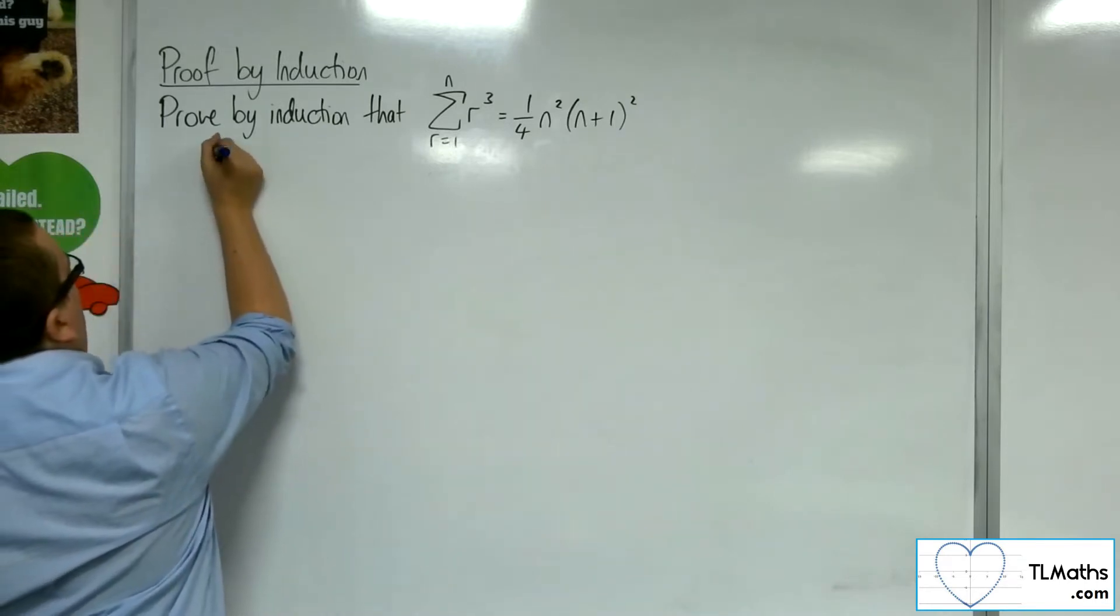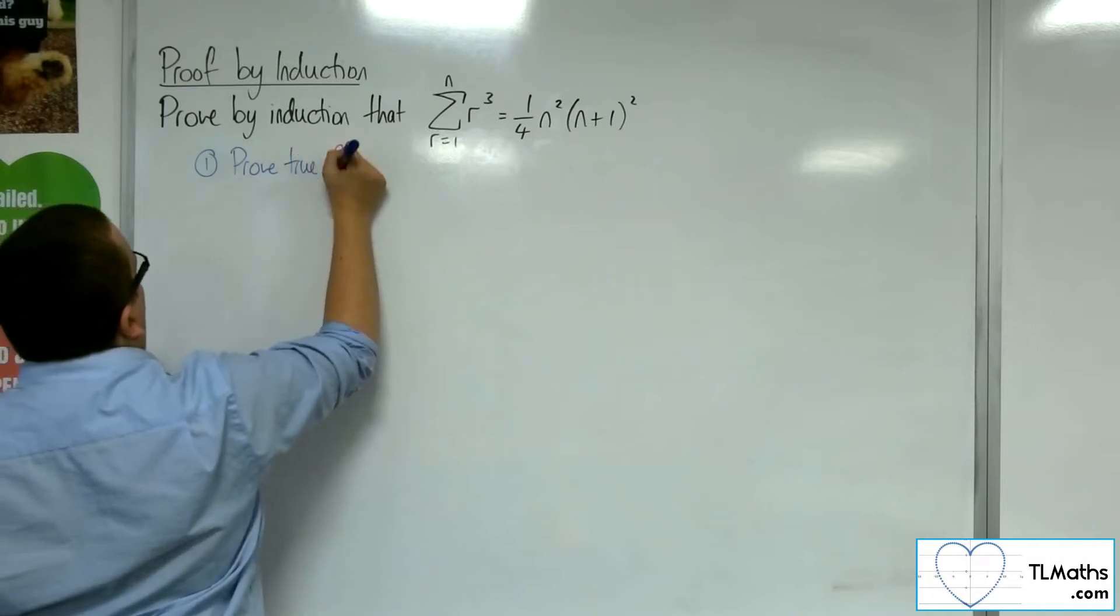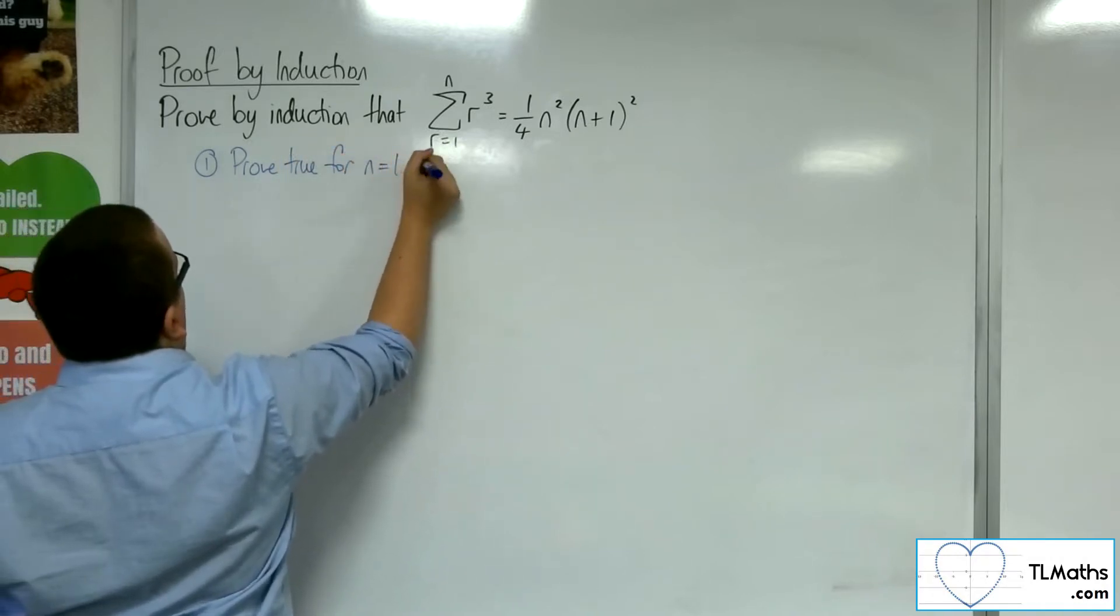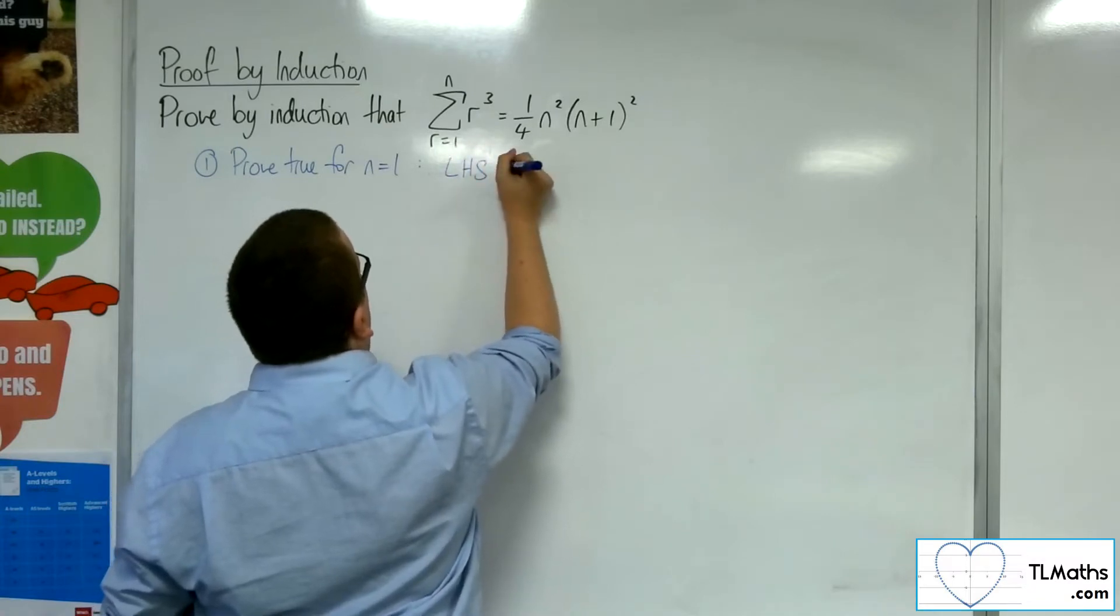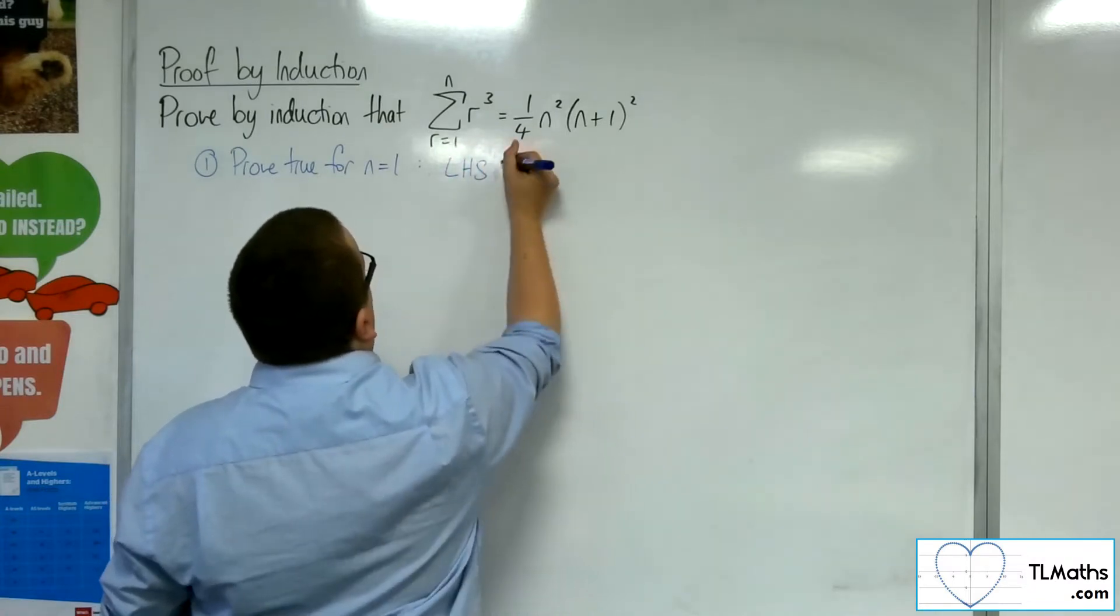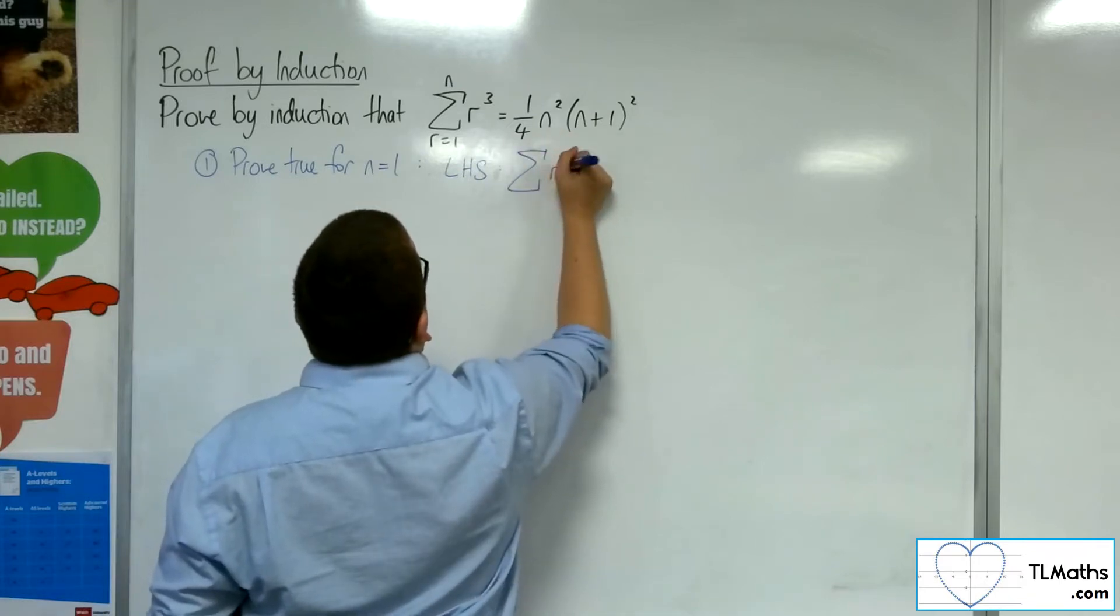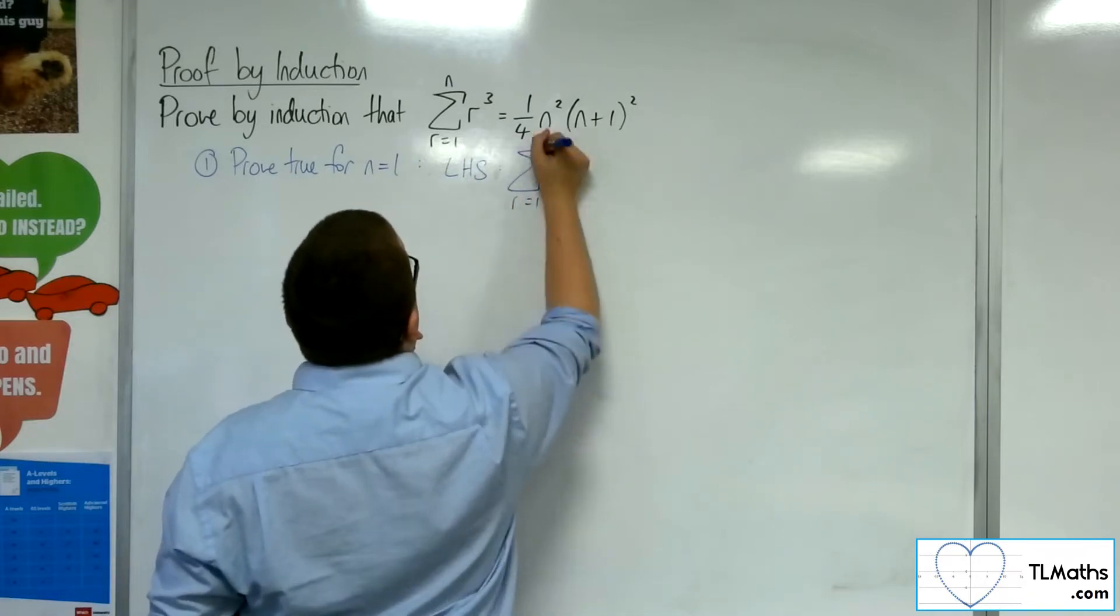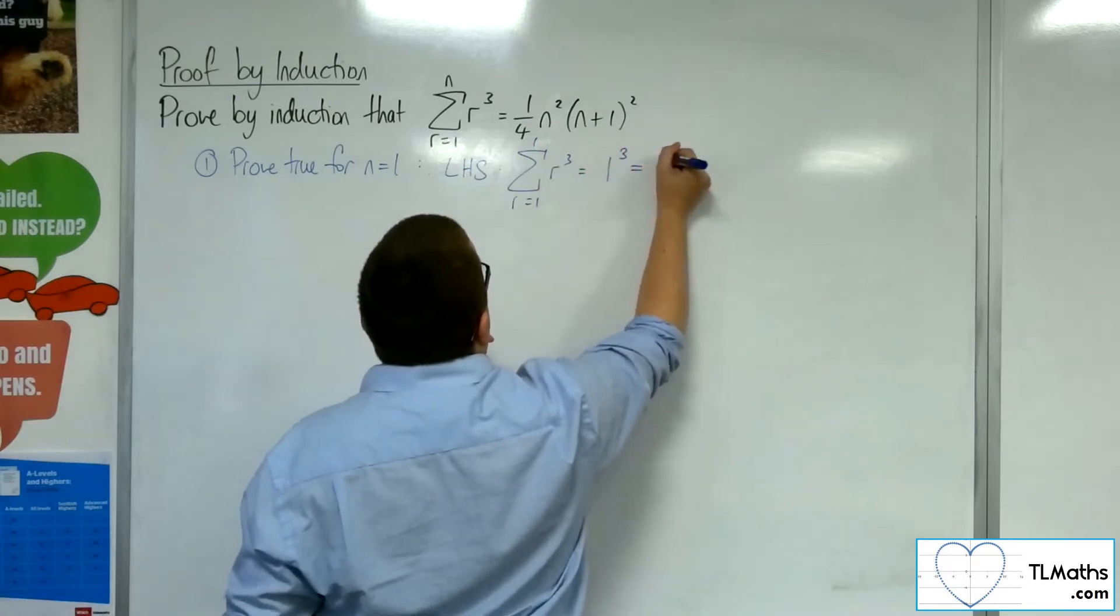Step number 1. Prove true for n equals 1. So substituting n equals 1 into the left-hand side is the sum of r cubed from r is 1 up to 1. And so that would be just substituting in the 1, and so I get 1.